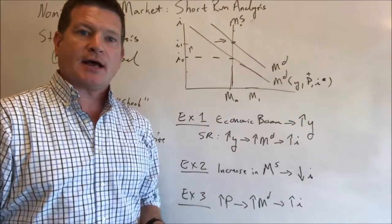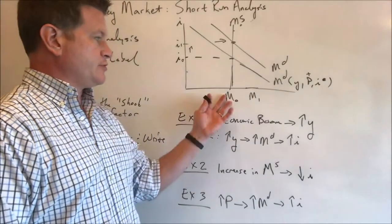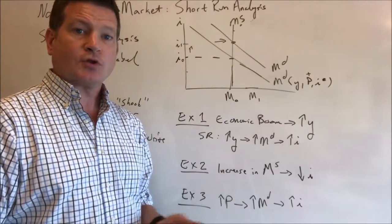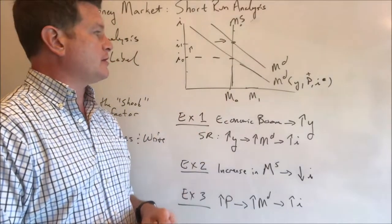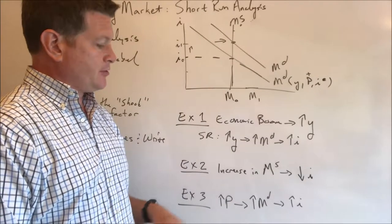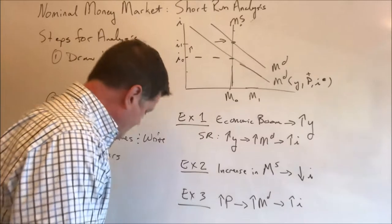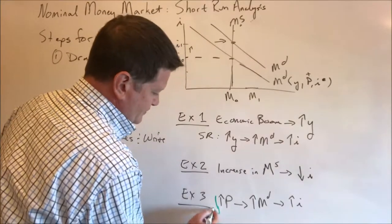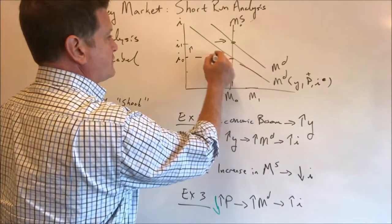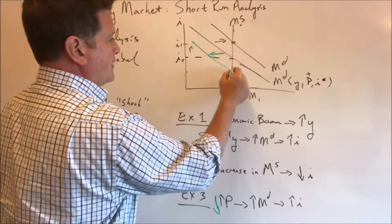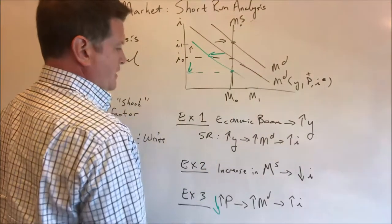All of those are basic analyses using this tool called a nominal money market. And you can do any of them in the opposite direction. A decrease in the money supply. For example, a decrease in the price level. We'll shift this curve the other way and push interest rates down.